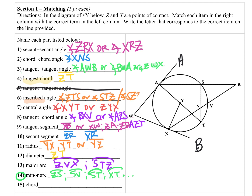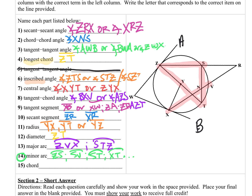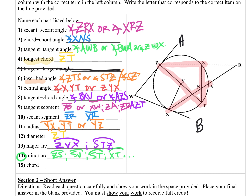A chord connects two points on the circle. So ST would be a chord, or XV is a chord, or our longest chord ZT, or ZS. Anything connecting two points on the circle is a chord. You could write ST or TS, ZT, VX, or ZS — all with line segment symbols on top. And that is your first section.